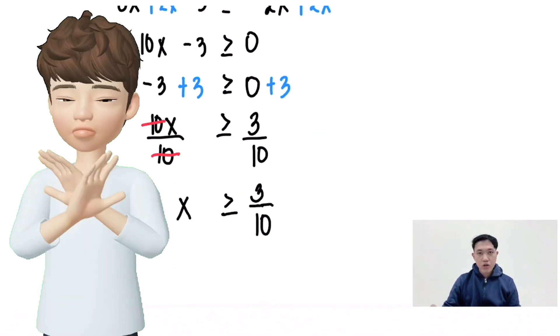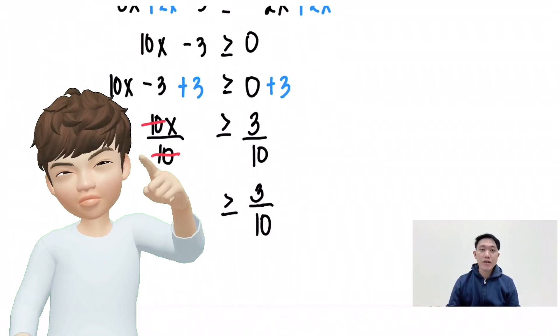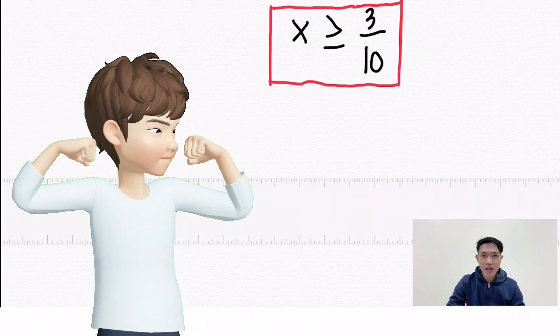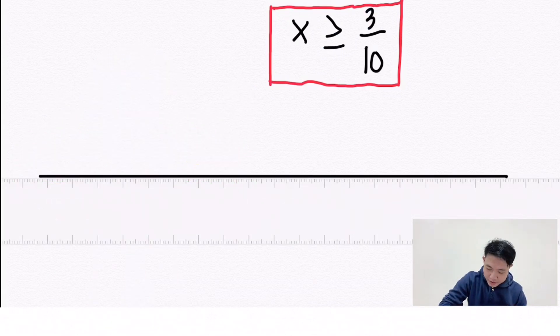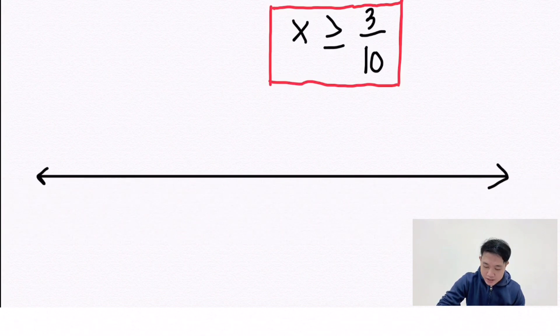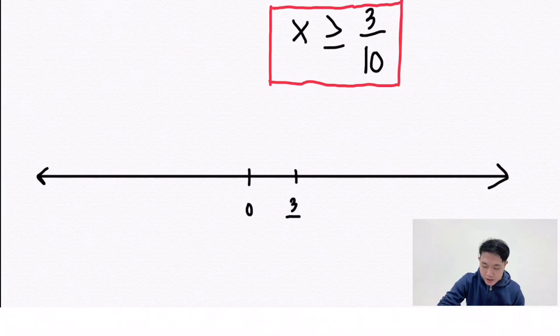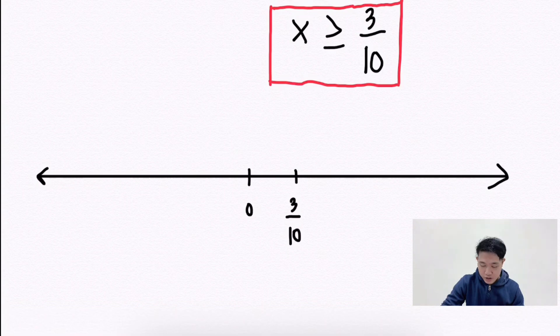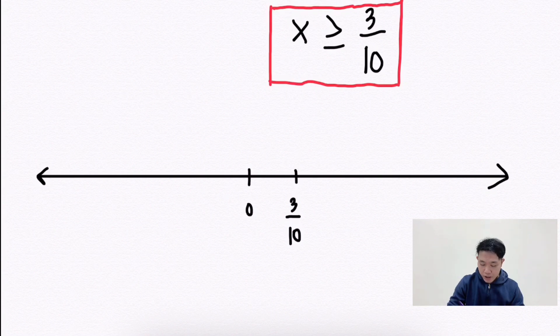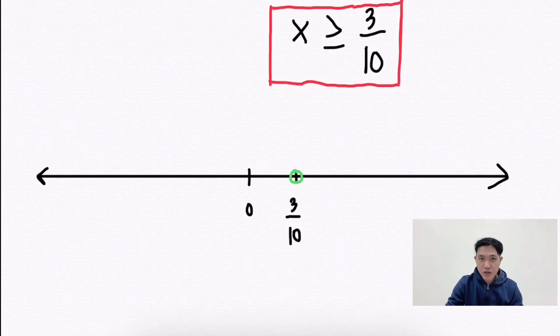3 over 10 is the final answer. You don't need to convert it into decimal form. Let's proceed to its graph by using a number line. 0 is located at the origin and 3 over 10 is located on the right side of the origin because 3 over 10 is positive. To know the values that will satisfy x is greater than or equal to 3 over 10, just observe the inequality sign. To find out, we will start at 3 over 10. The question is, is 3 over 10 included or excluded?